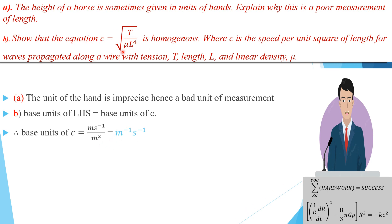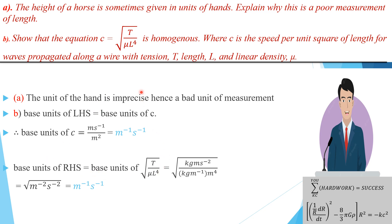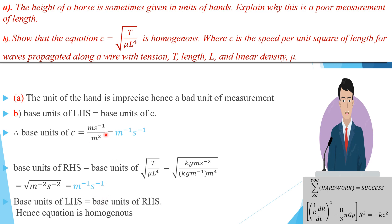Now we evaluate the base unit of the right-hand side, which is the square root of T divided by (mu times L^4). The base unit of T here is tension — force — which is mass times acceleration: kg·m·s⁻². The mu is linear density, and note that linear density is not the same as regular density: regular density is mass per unit volume, while linear density is mass per unit length, so its base unit is kg/m. Then L to the power 4 gives meters to the power 4. Simplifying and taking the square root gives per meter per second — matching the left-hand side, so the equation is homogeneous.